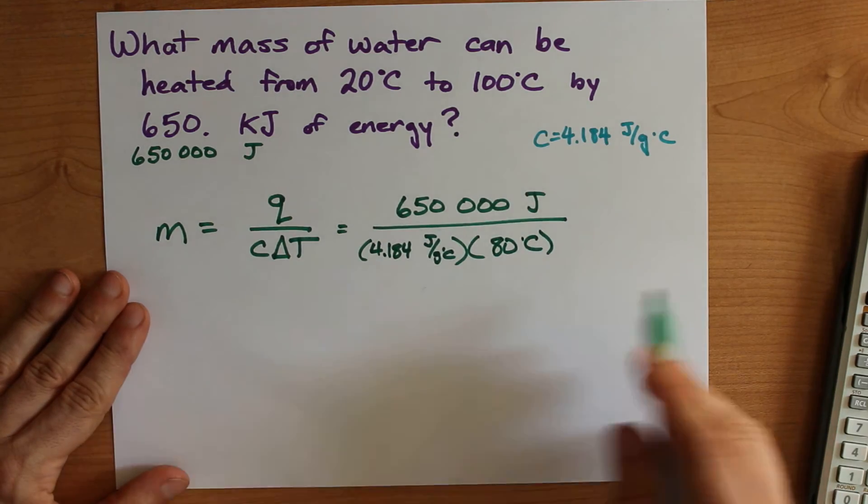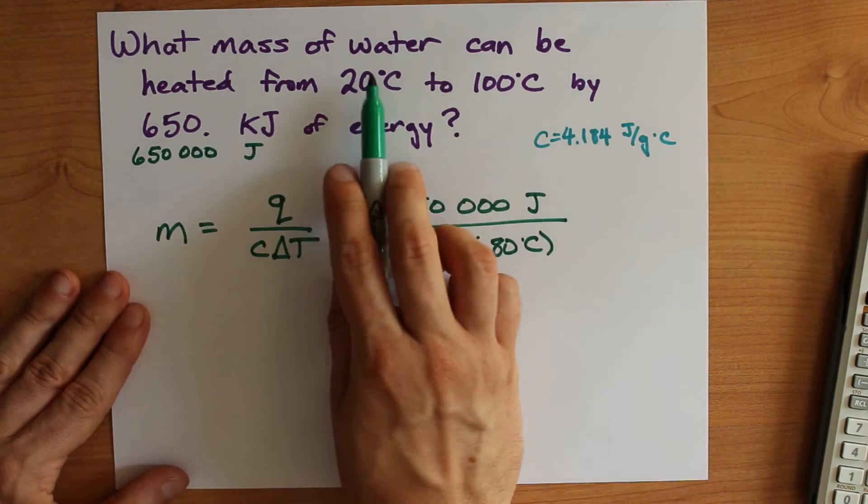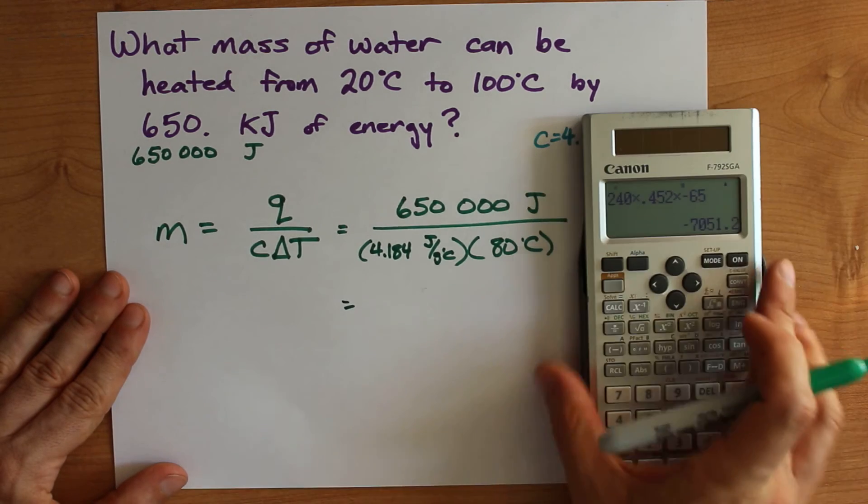So that's a delta t of positive 80 degrees. If you want to use the final minus initial formula, it's final minus initial. 100 minus 20 is 80. Cool! So we can do this on the calculator as well.